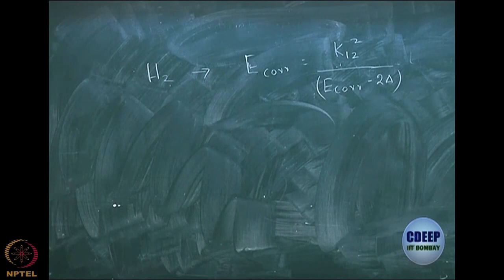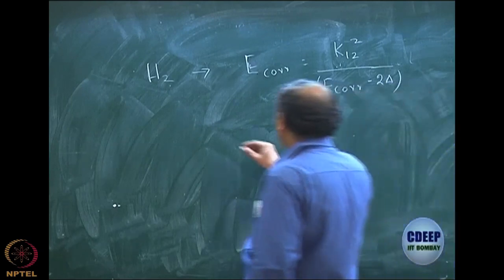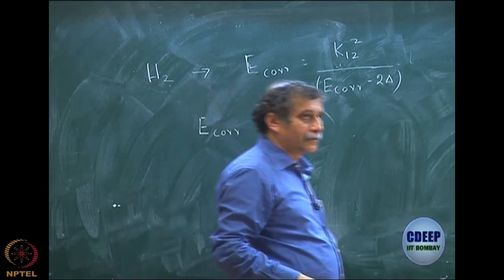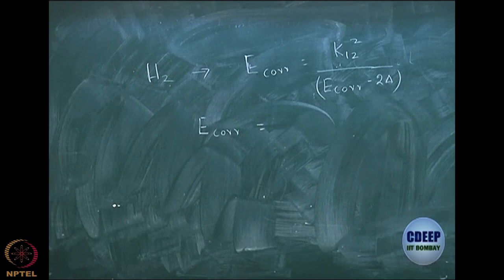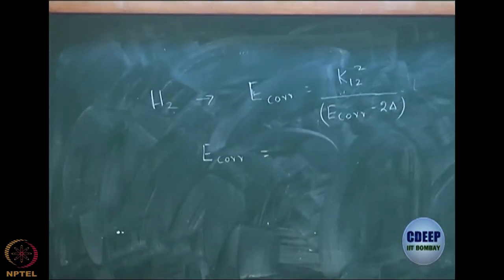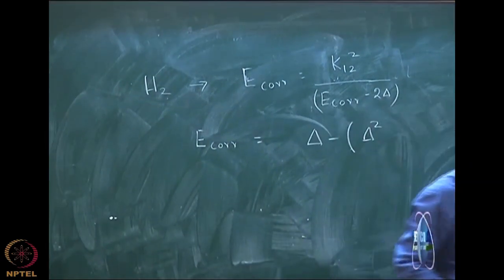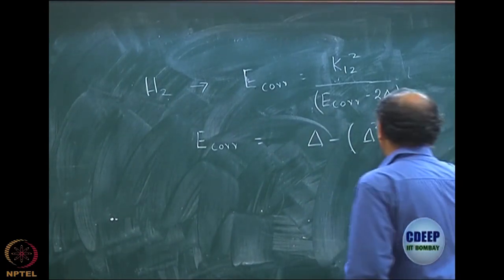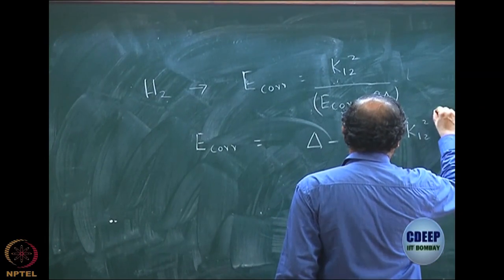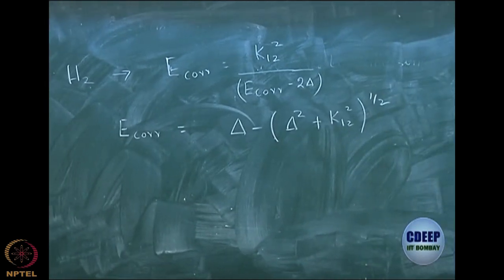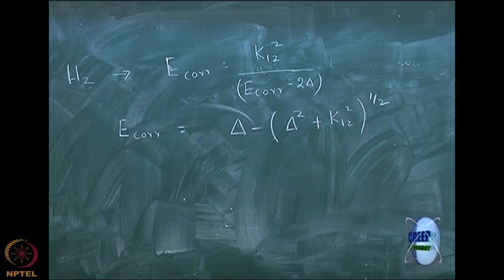If you solve this equation, it is a quadratic equation. E-correlation is equal to delta minus the square root of delta squared plus K12 squared. That is the result of the solution of the quadratic equation.